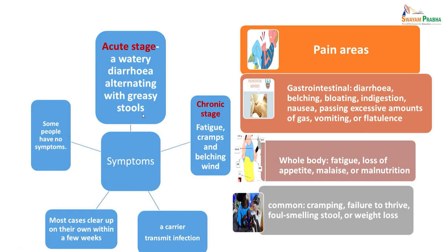Some people have no symptoms and remain asymptomatic, while others can have acute or chronic stages. In the acute stage, there can be watery diarrhoea alternating with greasy stools. In the chronic stage, patients can have fatigue, cramps, and belching, or become a carrier and transmit the infection. Many cases clear up on their own within a few weeks without treatment. Symptoms include abdominal pain, diarrhoea, belching, bloating, indigestion, nausea, excessive gas, vomiting, flatulence, whole-body fatigue, loss of appetite, malaise, malnutrition, cramping, failure to thrive, foul-smelling stool, and weight loss.